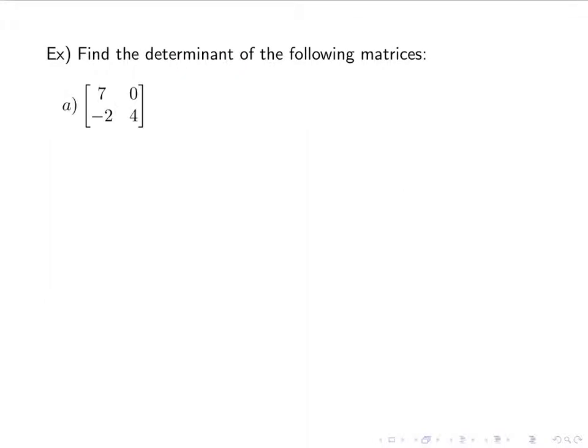So let's try another one. We have the matrix 7, negative 2, 0, 4. If I plug it into the formula for the determinant, I have 7 times 4 minus 0 times negative 2, and that gives me 28.